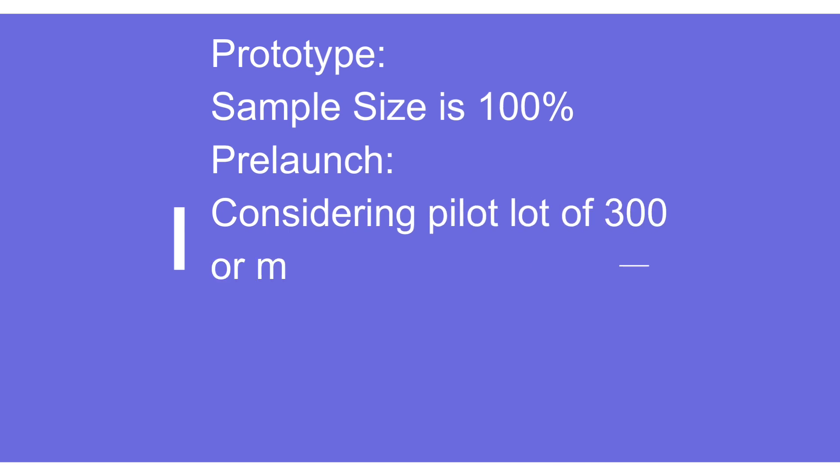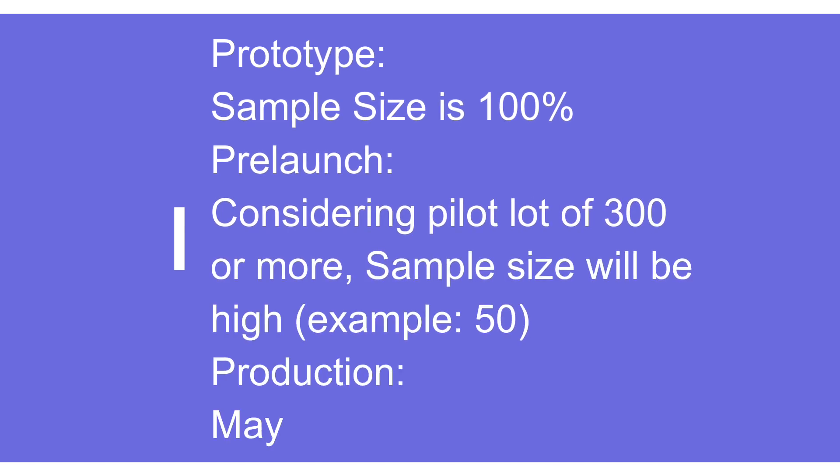Since we are making only a few pieces — 2 to 5 — the sample size is generally 100% for inspection in the prototype stage. In the pre-launch control plan, since we are making approximately 300 pieces, the sample size may be set — for example, checking after every 50 pieces. But in mass production, it depends on the requirement or customer approval, such as 2 to 5 pieces after every 2 hours.